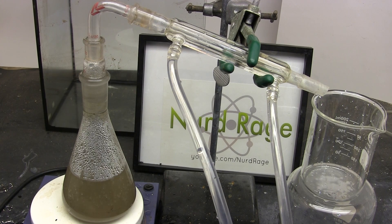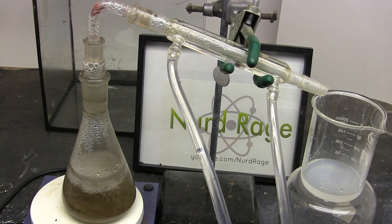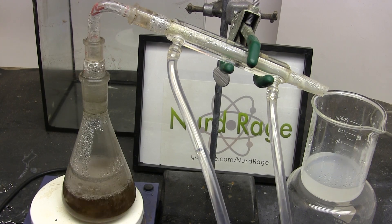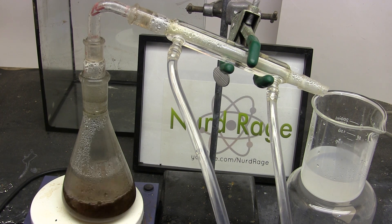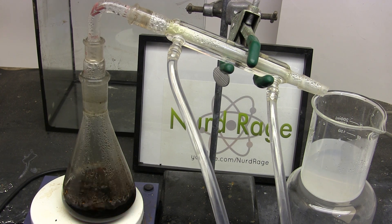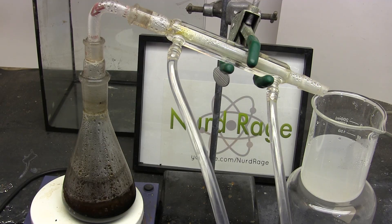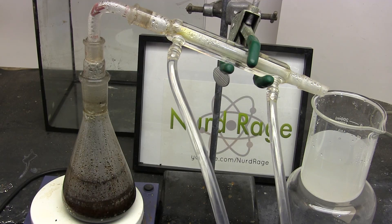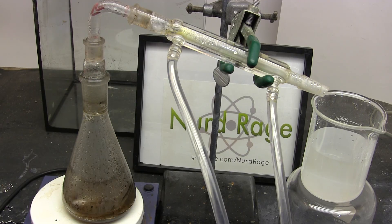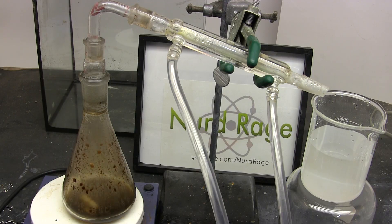It is here we are recovering the hydrobromic acid catalyst for reuse. The solution is cloudy due to small amounts of sulfur being carried over with the distillation. If you're reusing the hydrobromic acid to make more sulfuric acid then this isn't a problem. But if you really want to get rid of it just let the acid sit for a few days and the sulfur will settle to the bottom.